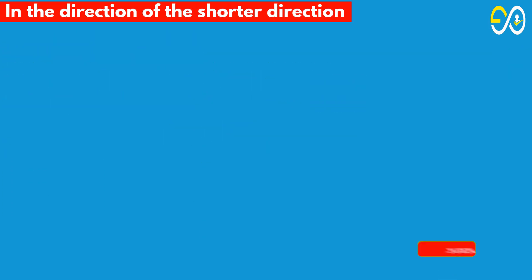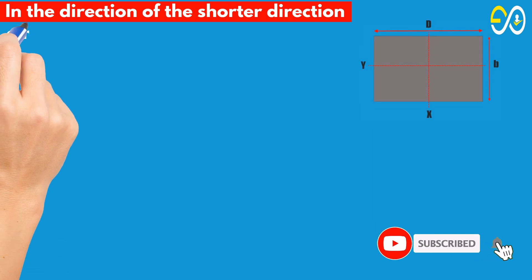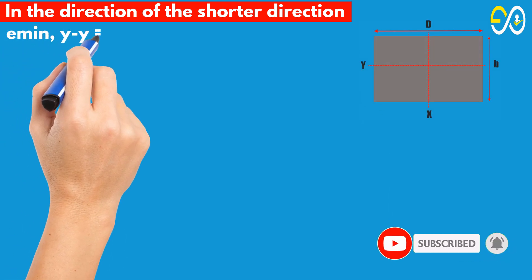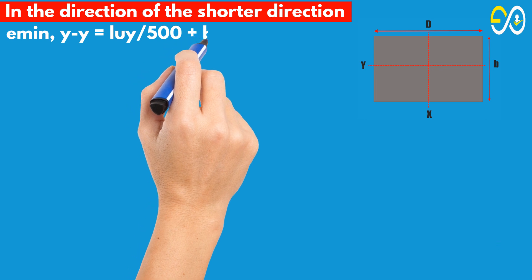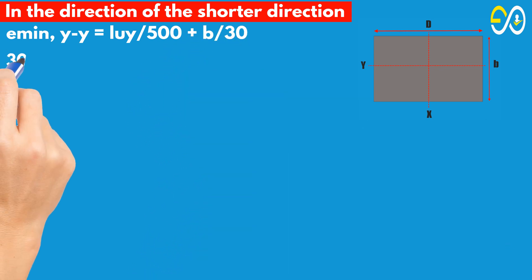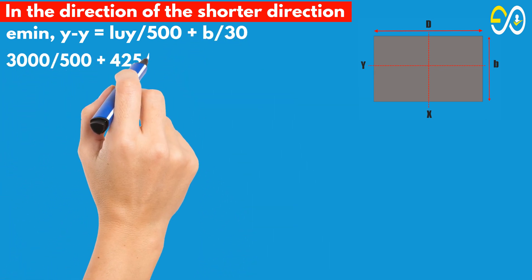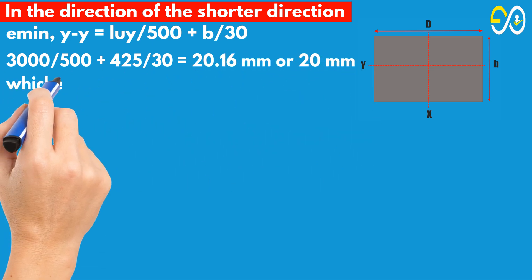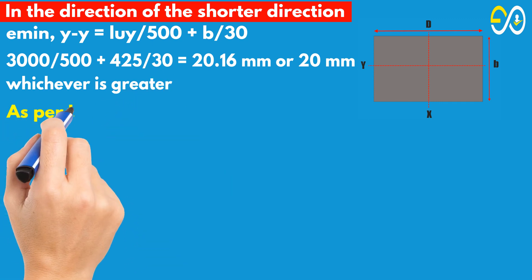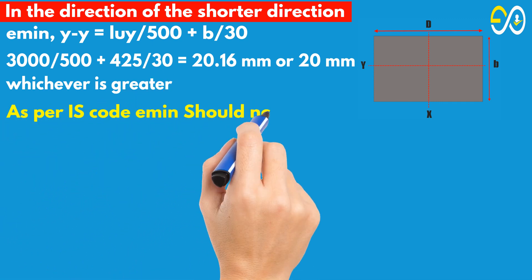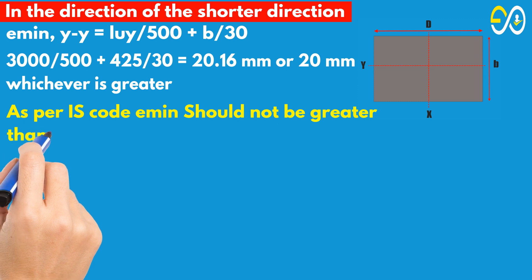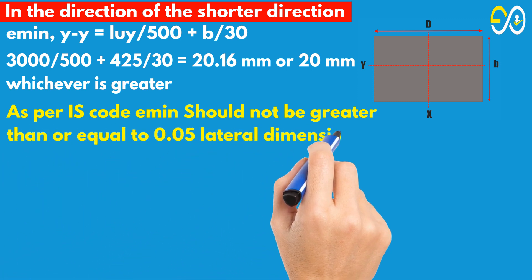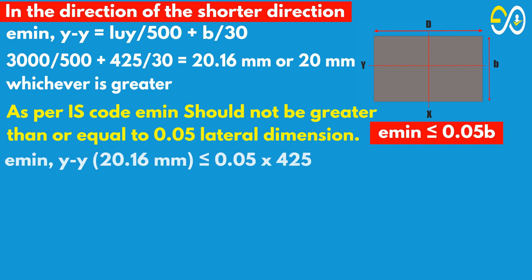In the direction of the shorter dimension: e_min equals unsupported length upon 500 plus B upon 30. 3,000 upon 500 plus 425 upon 30 equals 20.16 mm or 20 mm, whichever is greater. As per IS code, e_min should not be greater than or equal to 0.05 times lateral dimension: 0.05 times 425 equals 21.25 mm. Condition satisfied.